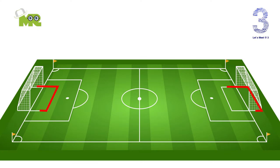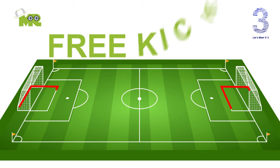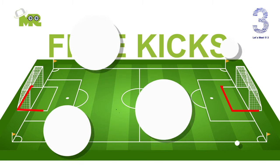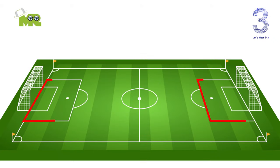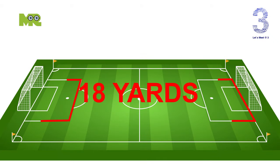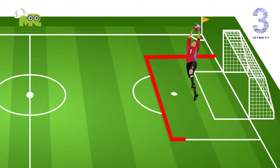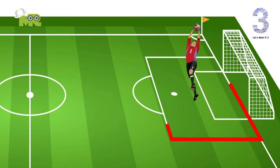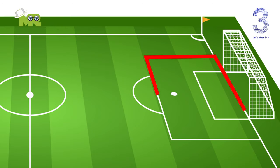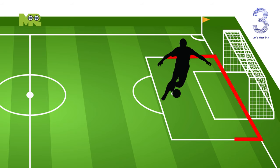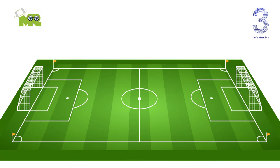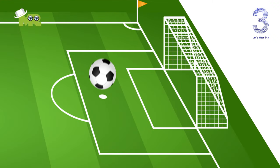The goal area is a box that extends six yards out from the goal post, and free kicks are taken from this area. The penalty area is a box that extends 18 yards out from the goal post. In this area, the goalkeeper may use their hands, and any foul by the defense in this area will result in a penalty kick.